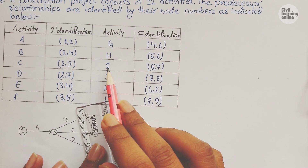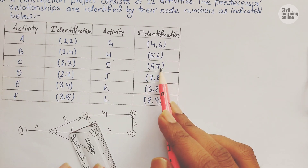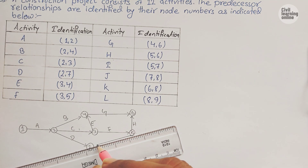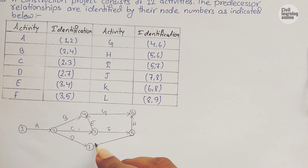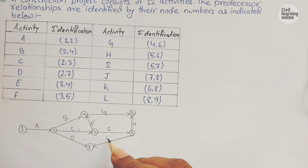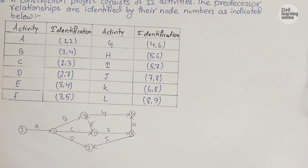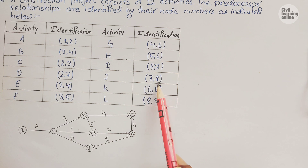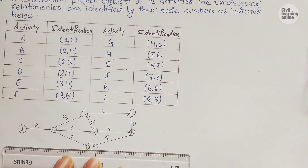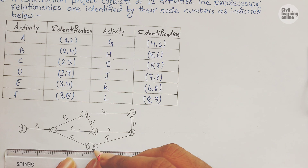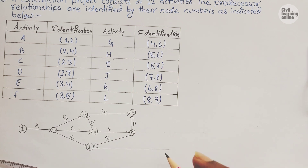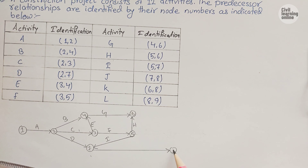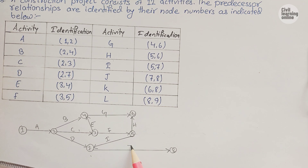We have another activity starting from node 5 and terminating at node 7 — this is activity I. We also have activity J which starts from node 7 and terminates at node 8. Draw the activity starting from 7 and terminating at node 8 — this is activity J.